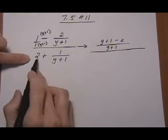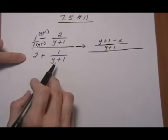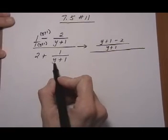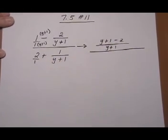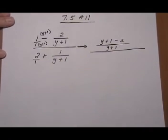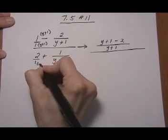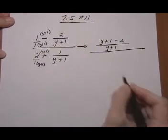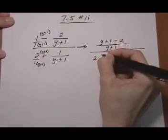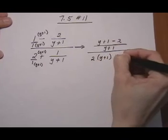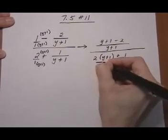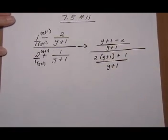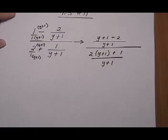Now the bottom piece — we have two terms and want just one fraction. The LCD is again (y plus 1). Think of the whole number as 2 over 1, so we multiply (y plus 1) top and bottom, and that gives us 2 times (y plus 1) plus 1, all over (y plus 1).